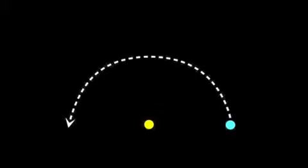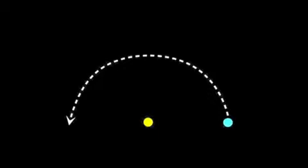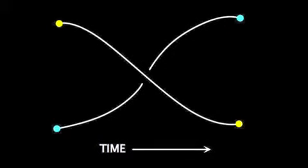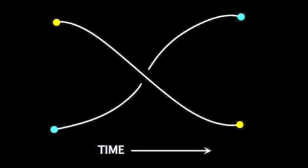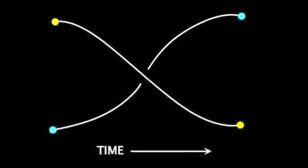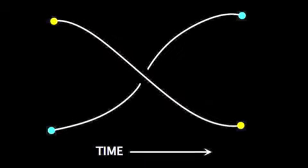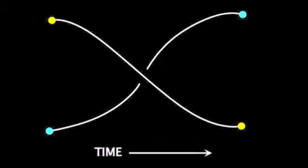When we exchange two Majorana fermions in space, we define a braid of the world lines of these two particles. Because of the non-abelian statistics, their wave function undergoes a non-trivial transformation. Therefore, combining more braids has the power to perform logical operations.